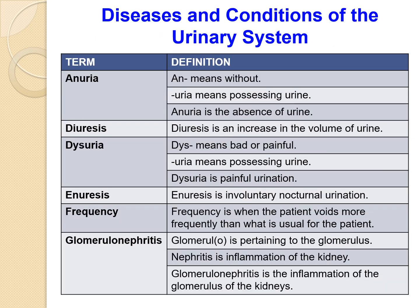Now coming to some of the diseases and conditions of the urinary system. First, anuria — 'an' means without, 'urea' means relating to urine, so anuria is the absence of urine. Next is diuresis, which is an increase in the volume of urine.